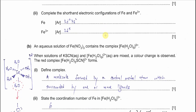Part 2: complete the shorthand electronic configurations for Fe²⁺ and Fe³⁺. Iron's full configuration is [Ar] 3d⁶ 4s². For Fe³⁺, you remove three electrons — two from 4s (further from nucleus) and one from 3d — giving [Ar] 3d⁵. So forming Fe³⁺ releases two electrons from 4s and one from 3d.